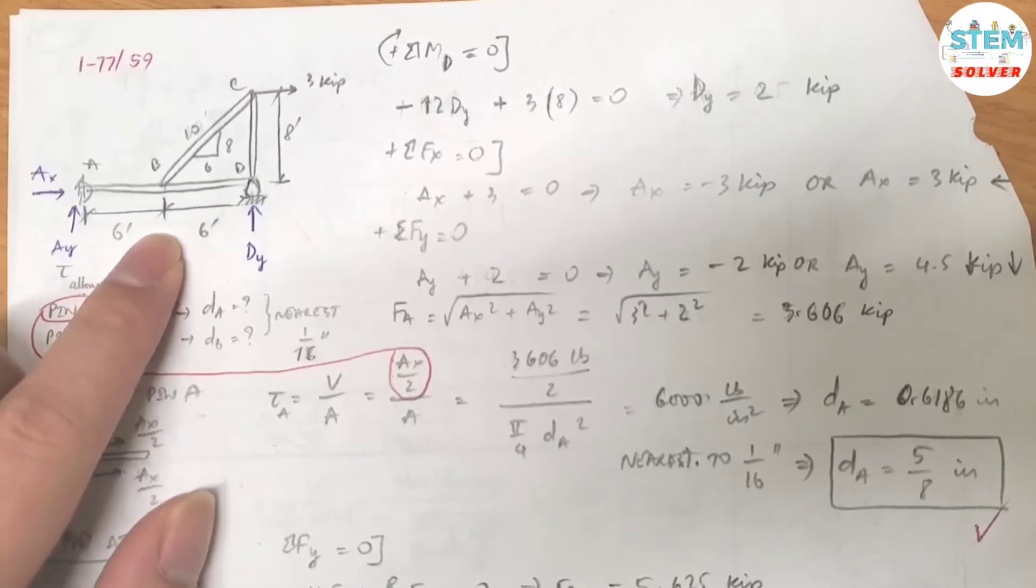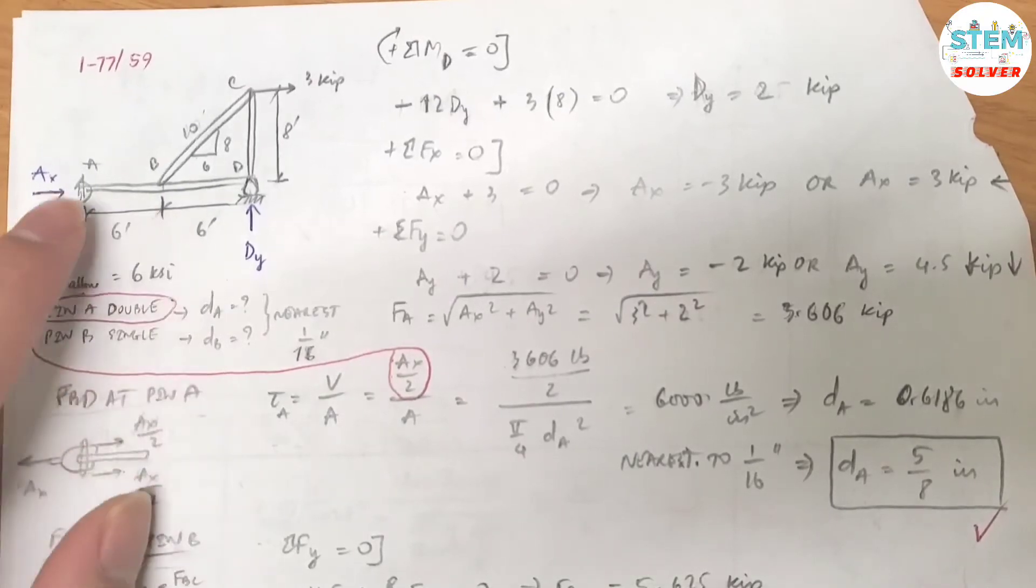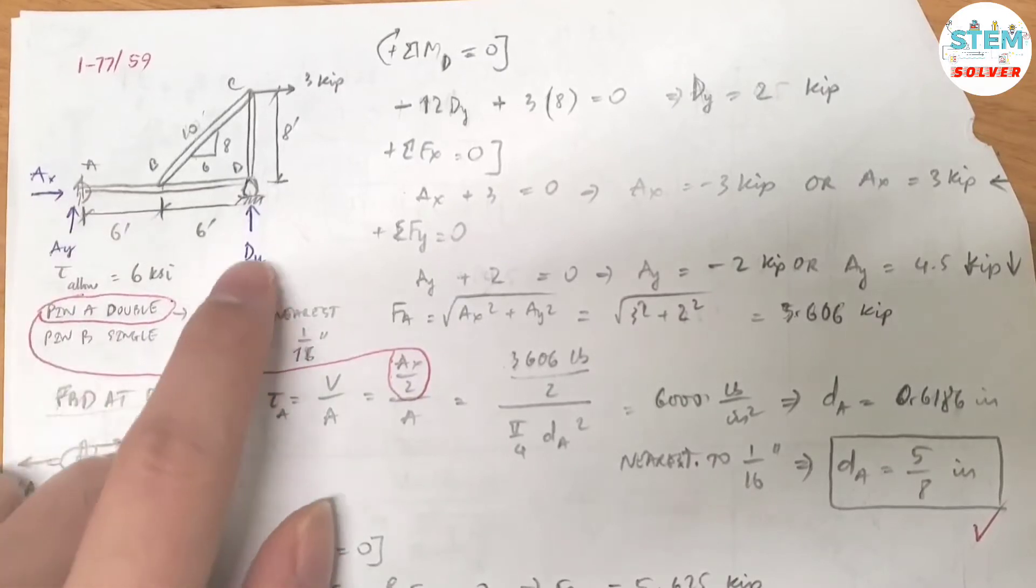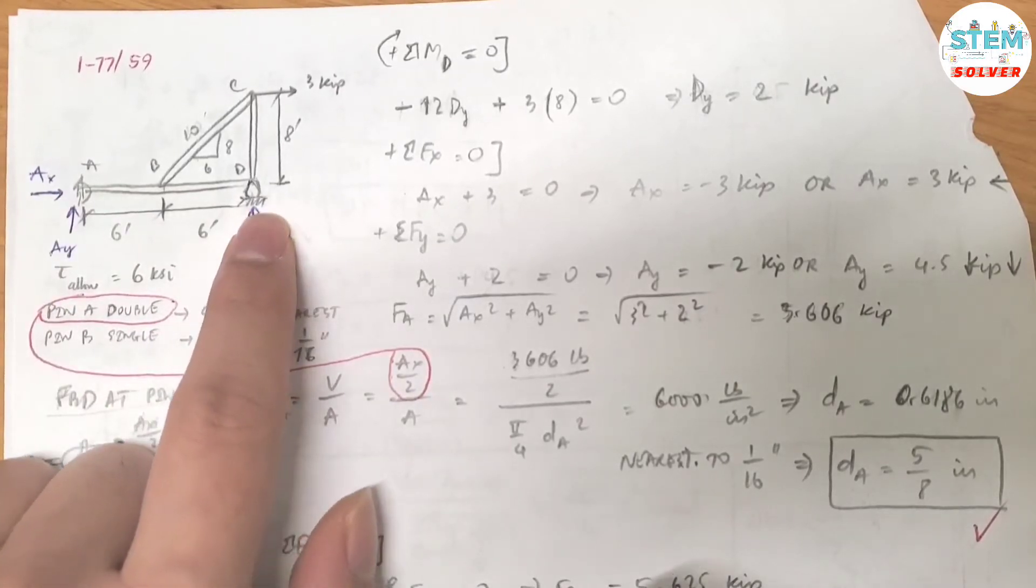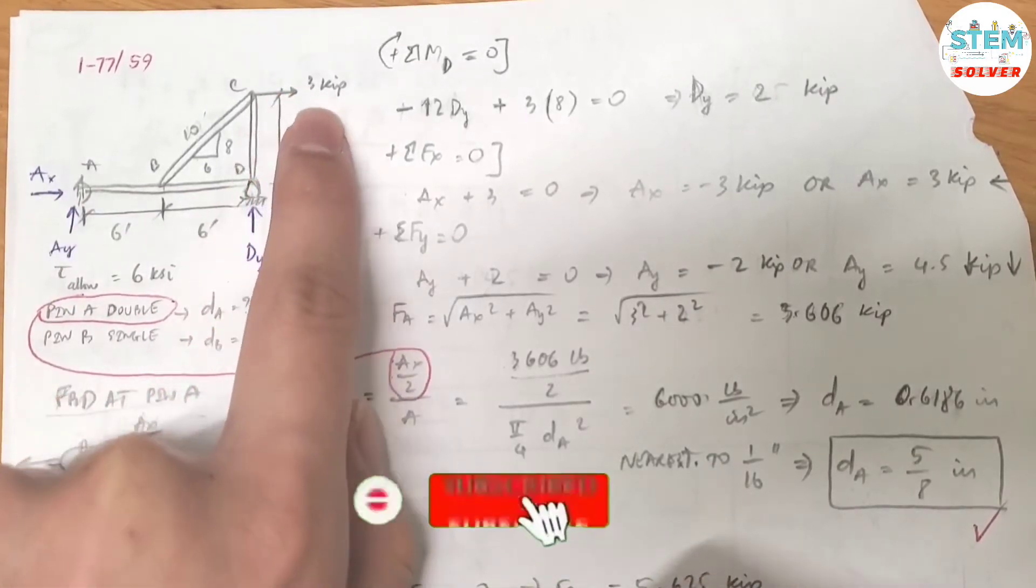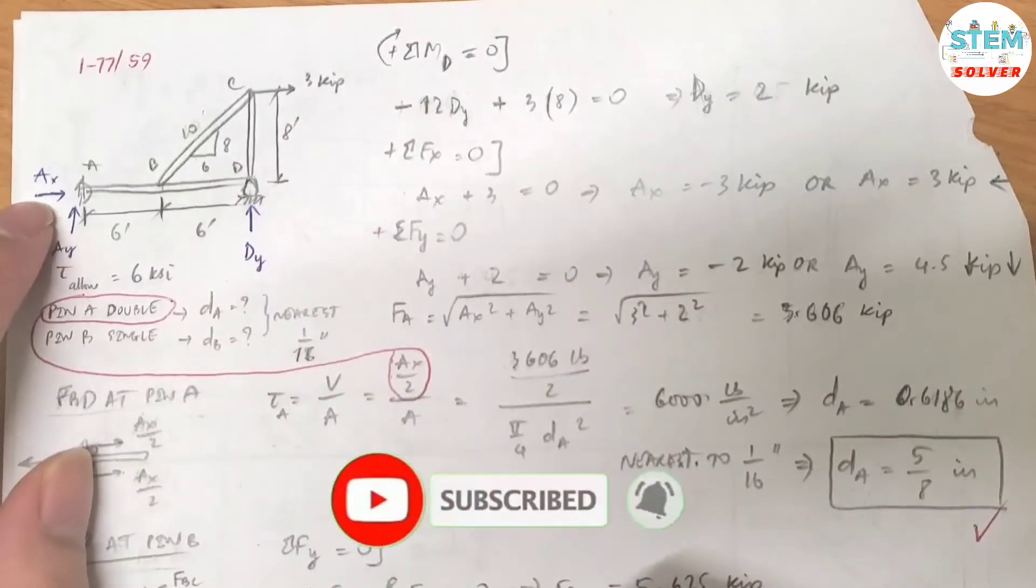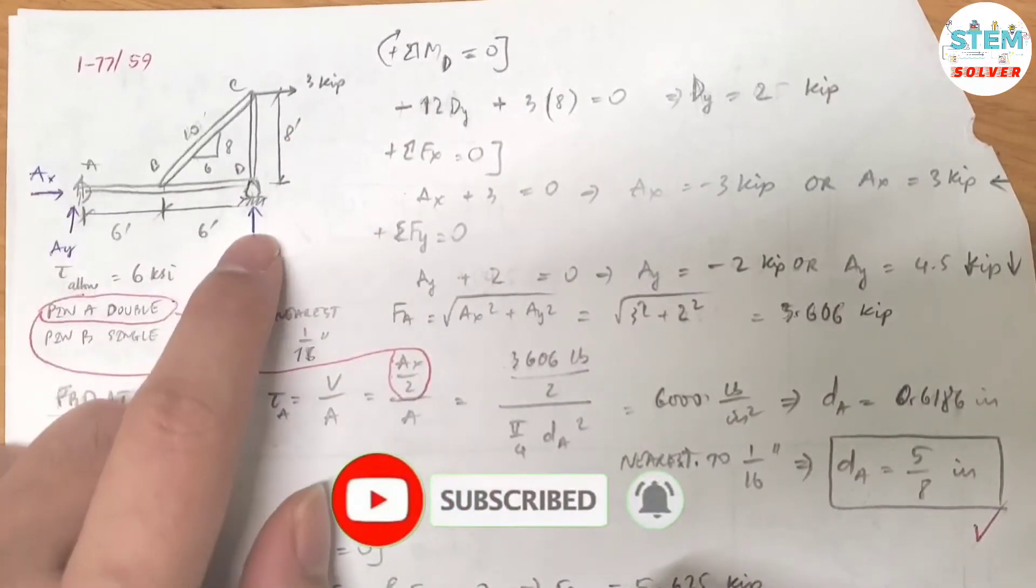So here is the free body diagram for the figure. You have double shear at A and single shear at B, and here is the external force. Here are the internal forces at pin A and D.